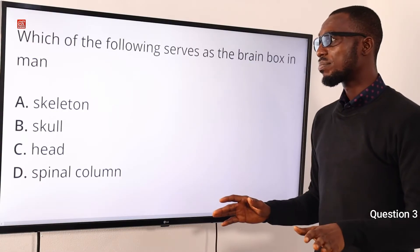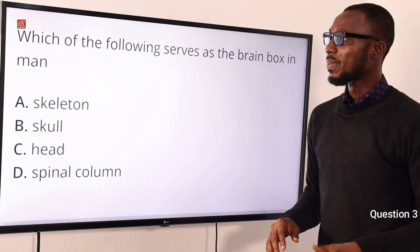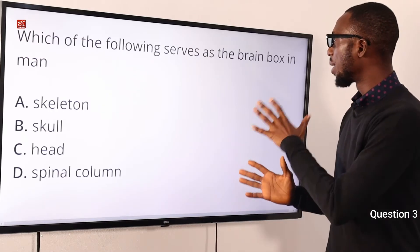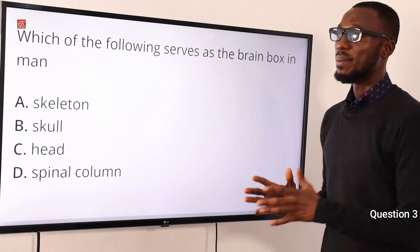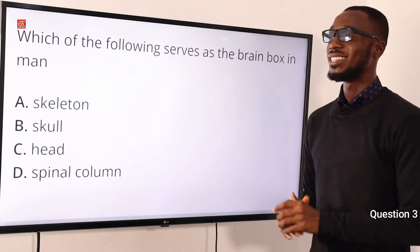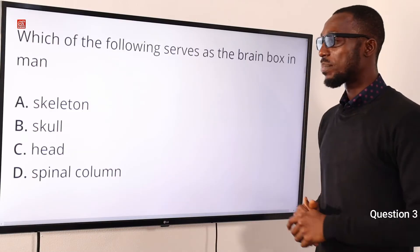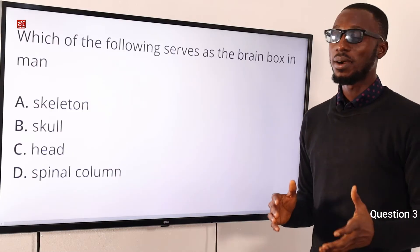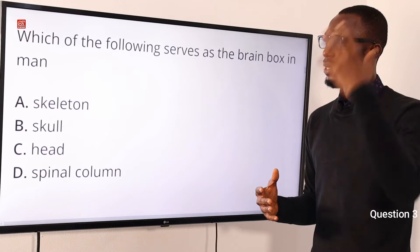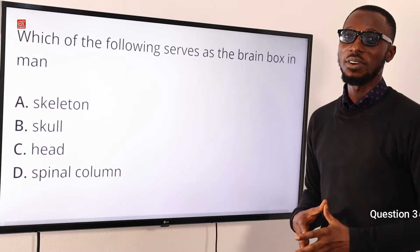Going back to the question: which of the following has the brain box in man? The cranium serves as a protective function to the brain. So option B is very correct.